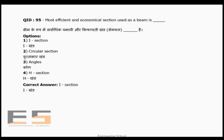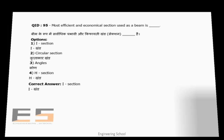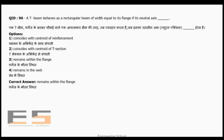Question 95: The most efficient and economical section used as a beam is the I-section. The I-section is considered the most economical and most efficient section for beams.